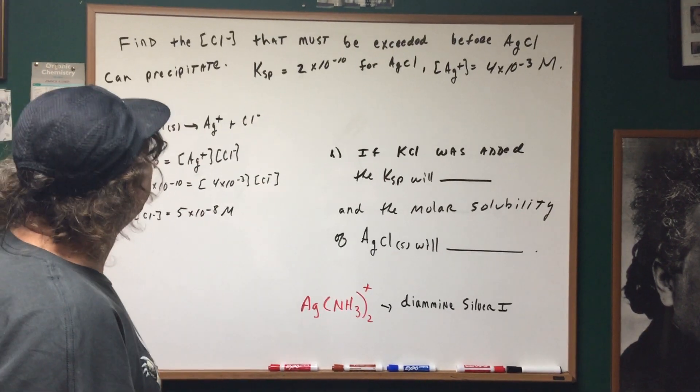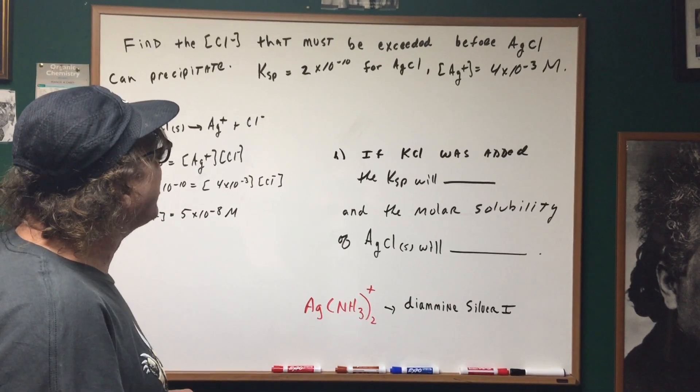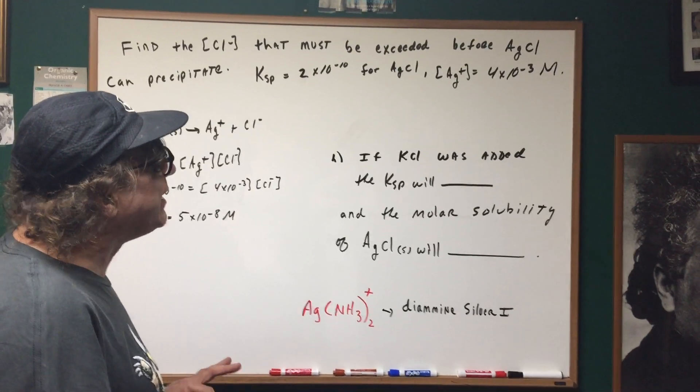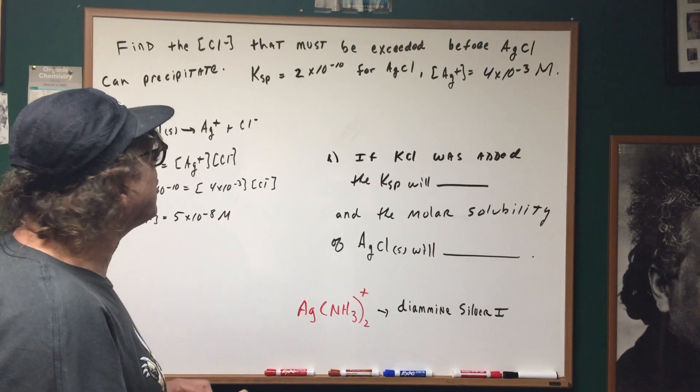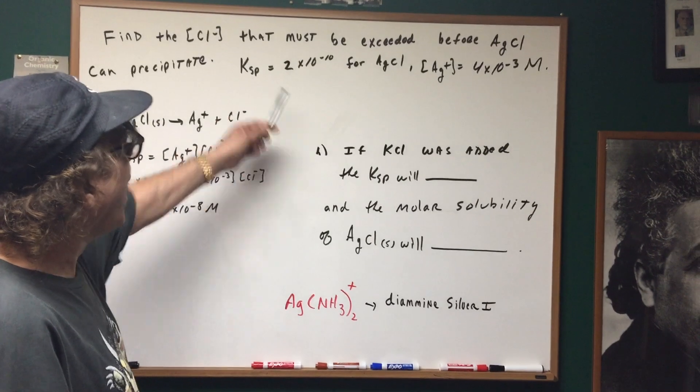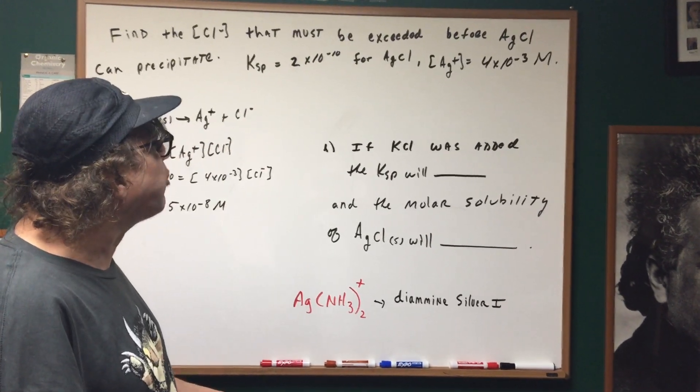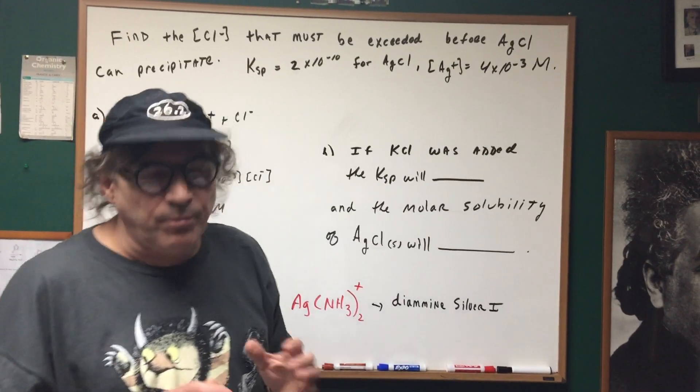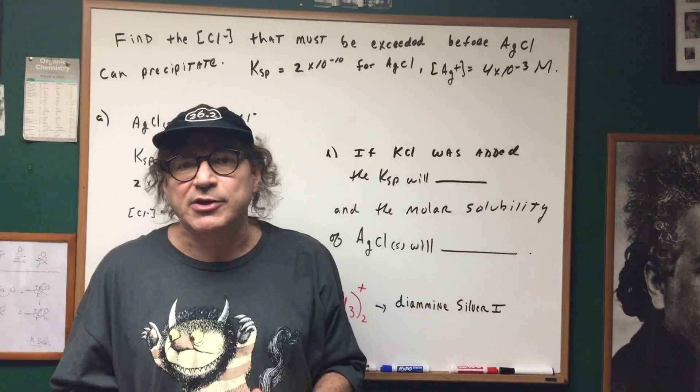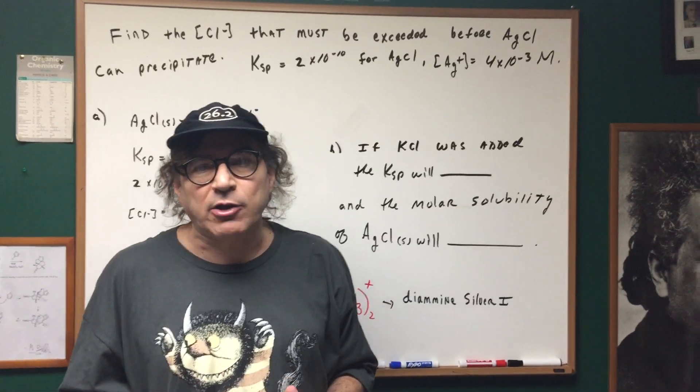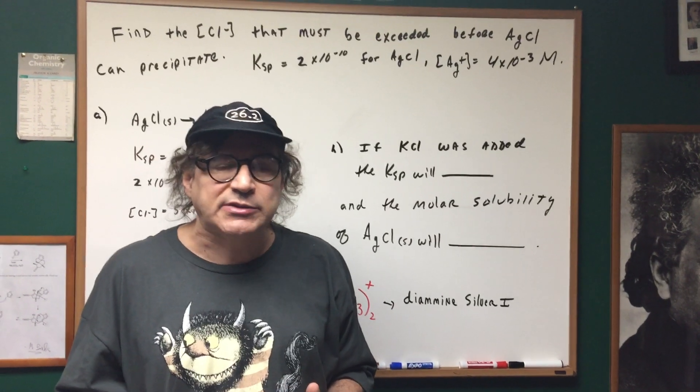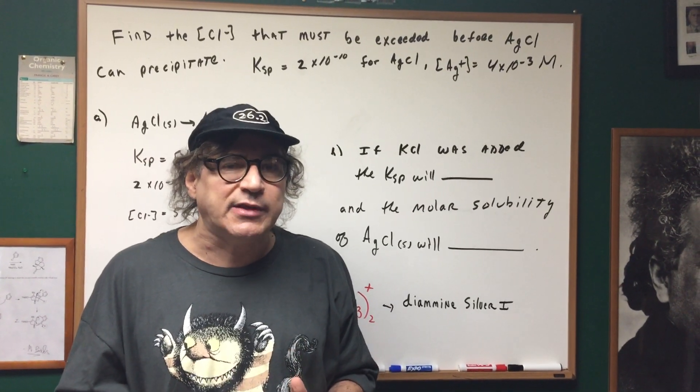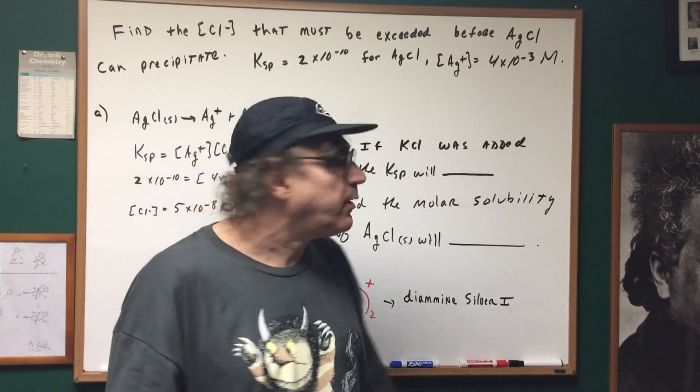I say to you, find the chloride ion concentration that must be exceeded before silver chloride can precipitate. I gave you the Ksp of silver chloride and I give you the silver ion concentration. So what we got to do is we have this solution and we're going to be adding chloride ions and we want to see how much chloride is needed to cause us to see a precipitate.